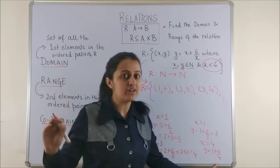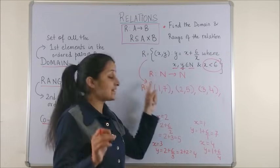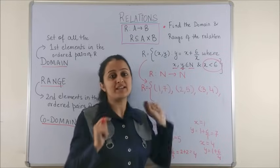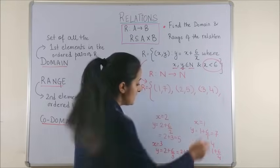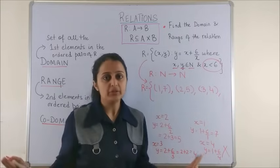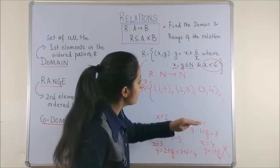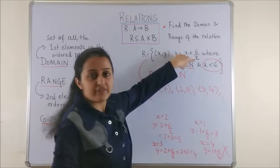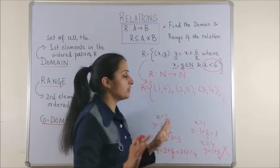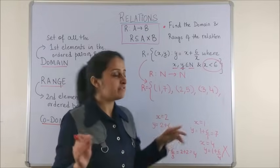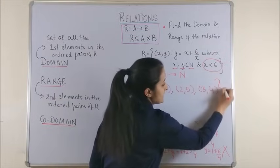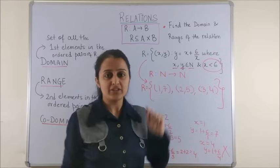Please understand, for a relation, the second element also has to be from the second set which happens to be a natural number. Since, it won't be a natural number, so 4 comma we will not consider. Talking of 5, again it will be 5 plus 6 by 5 which won't give us a natural number. And, we don't go beyond 5 because it's given your X is less than 6. So, this is the end of your given relation.